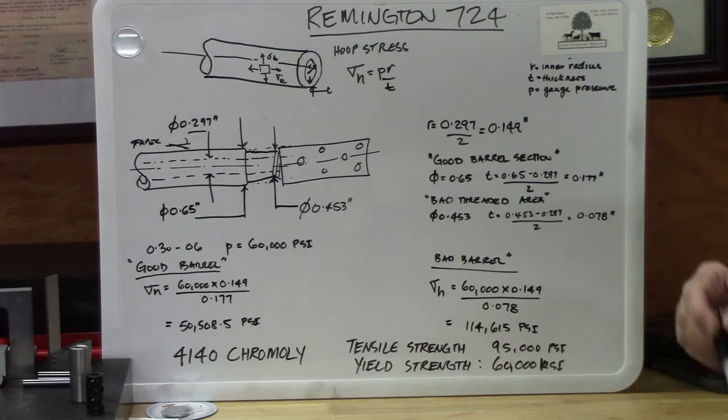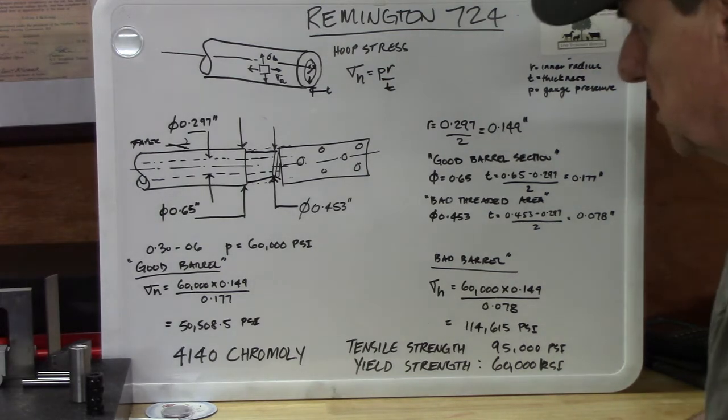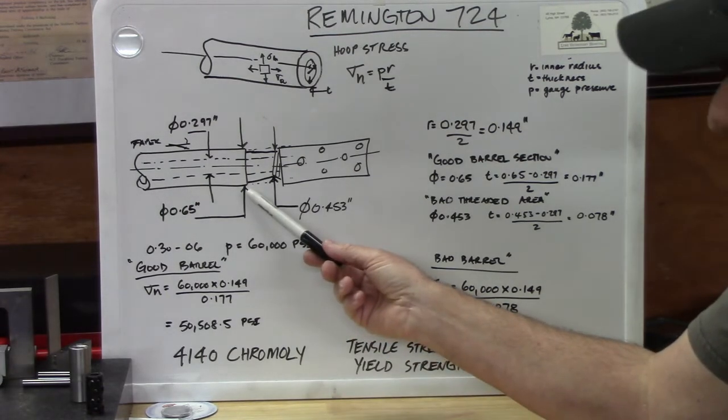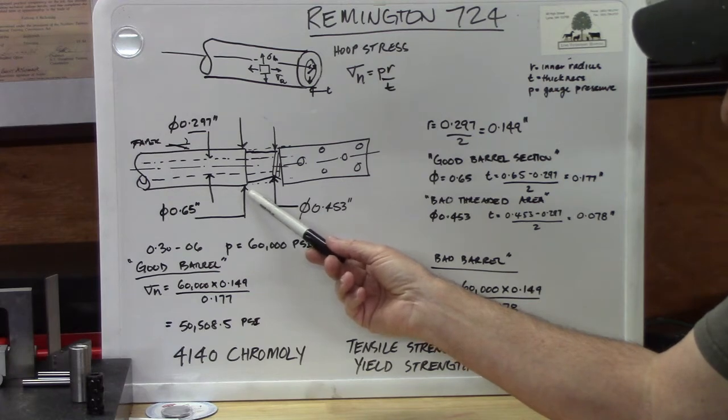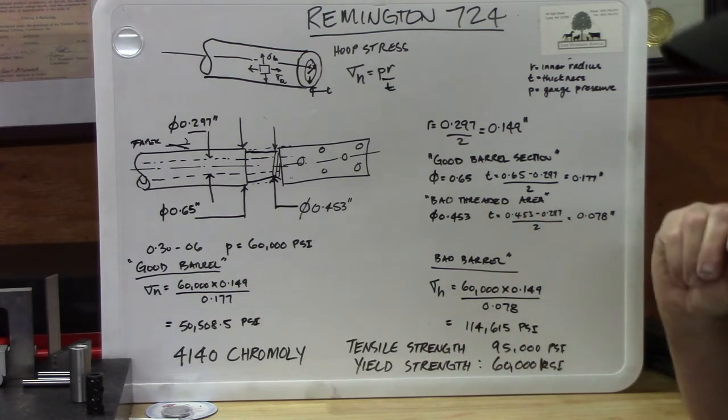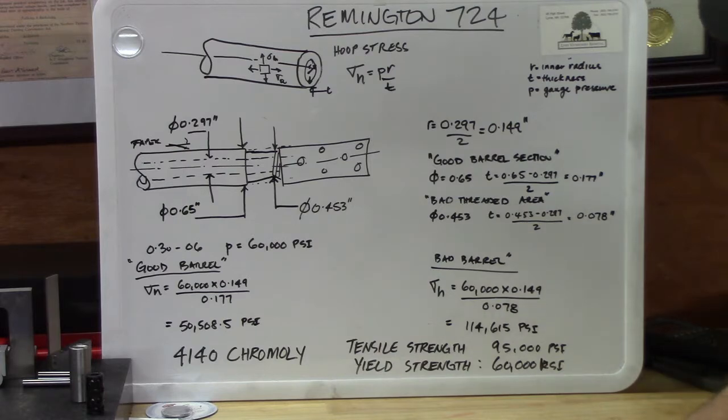So I did some checks, I used my pin gauge and we came up with a diameter of 0.297 for this 30-06 which gave us a radius of 0.149 inches. I went back to the good part of the barrel, for want of a better word, prior to being machined and the diameter at that point, even though we know this had a taper so it would have slightly reduced in diameter a little bit more, was just over five eighths of an inch, 0.65.